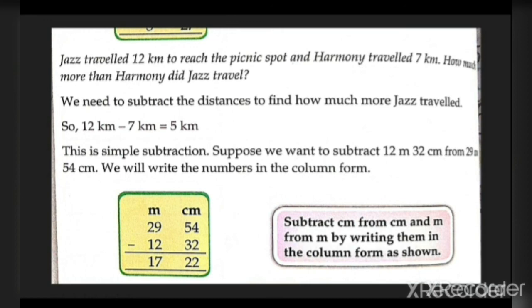To subtract 12 meters 32 centimeters from 29 meters 54 centimeters, we write the numbers in column form. First we have the meter column and then the centimeter column. Subtract cm from cm and m from m by writing them in the column form as shown.